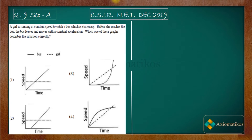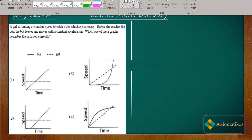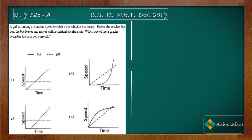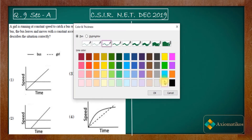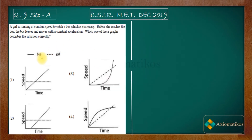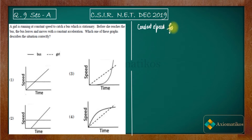Focus on what is given to you — that is how you will solve this problem. In the graphs, the solid line represents the bus and the dotted line represents the movement of the girl. Initially, it is given that the girl is running at a constant speed.